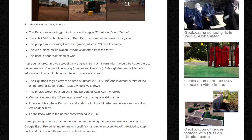We know the Facebook user tagged their post as being in Equatoria, South Sudan. The initial 'KK' probably refers to Kaju Keji, the name of the town I was given. The people were moving towards Uganda, which is 20 minutes away. There's a place called Kansuk some kilometers from the town, and the user is near their place of work.